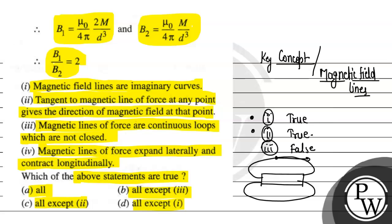Now, the fourth is magnetic lines of force expand laterally and contract longitudinally. If you look at the diagram, you see the lines vertically contract. So the contraction of the line is longitudinal. And when they fail, they go to the top because of repulsion. So the fourth option is true.